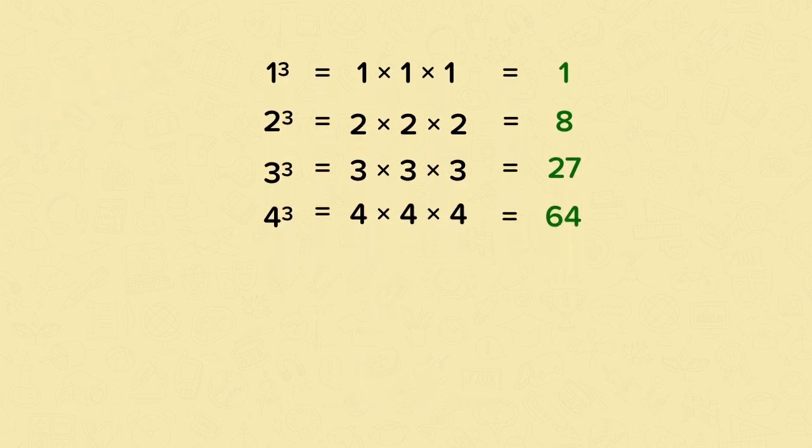As the numbers get larger, the calculations become a little more challenging. So now let's try 5 cubed. To work out 5 cubed, we need to do 5 times 5 times 5. Let's start with 5 times 5. That's 25.